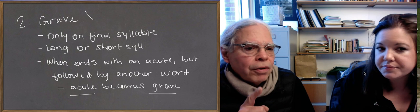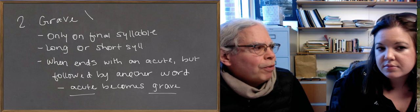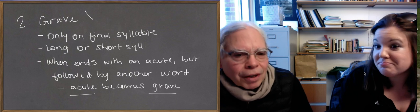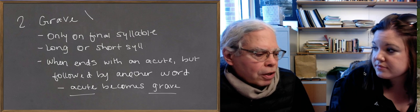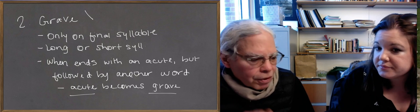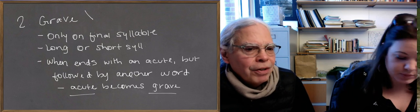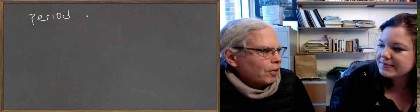To make the rule clear: when a word ending in an acute is followed by another word, the acute becomes a grave. What else could it be followed by other than another word? A punctuation mark. So if there's a punctuation mark after a word that ends with an acute, it stays acute. The punctuation marks in Greek include a period — the Greek word is periodos — which means a journey, a road around a place, marking the end of the journey.